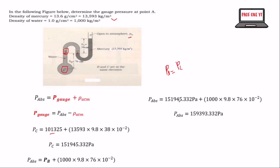Now we find the gauge pressure at point A. We subtract the atmospheric pressure from the absolute pressure at A, and when we do that correctly, we get 58,068.332 Pascal.